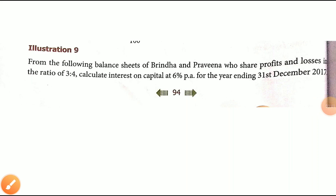Students, now we are going to Plus 2 Accountancy Subject Unit 3, Accounts of Partnership Form Fundamentals. We will see Illustration 9 and Exercise 9. From the following balance sheet of Brinda and Praveena, who share profits and losses in the ratio 3 is to 4, calculate interest on capital at 6% for the year ended 31st December 2017.